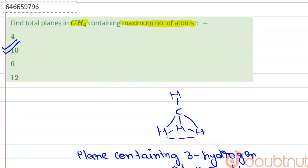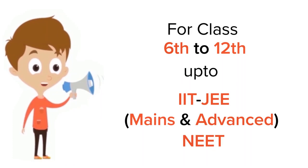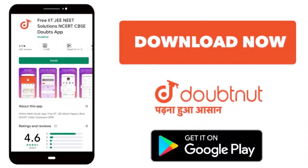For class 6 to 12th, IIT-JEE and NEET level, trusted by more than five crore students. Download Doubtnut app today.